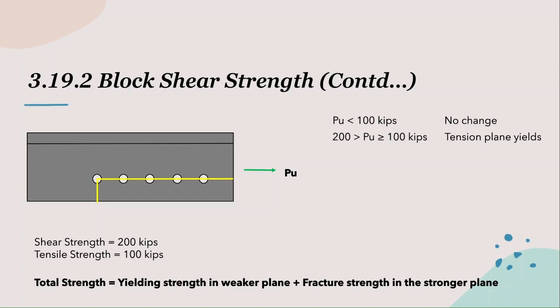We will use this concept to calculate the block shear strength of the member. If the force exceeds 200 kips, there is a failure in the shear plane as well. Now that both planes have fractured, the element fails in block shear. In this example, the bolts were arranged such that the shear plane is the stronger plane, but there may also be cases where the tensile plane is the stronger plane. In those situations, the shear plane would yield first before the tensile plane fractures. Going forward, we will use this concept to compute block shear strength.